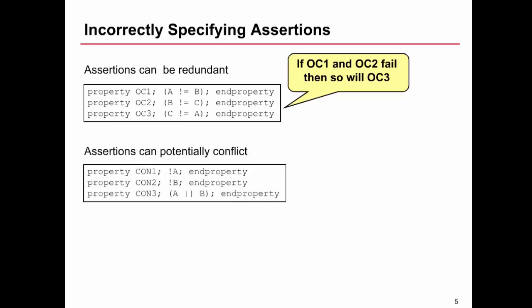Another thing to be wary of is that assertions, and note I said assertions not properties here, because you don't get the same effect with assumptions, can be written and they contradict. So CON1 and CON2 are both properties saying NOT A and NOT B should always be true every cycle. However, we've gone and written this property CON3 which says A or B must always be true every cycle. So clearly, not all of them can be true all of the time.